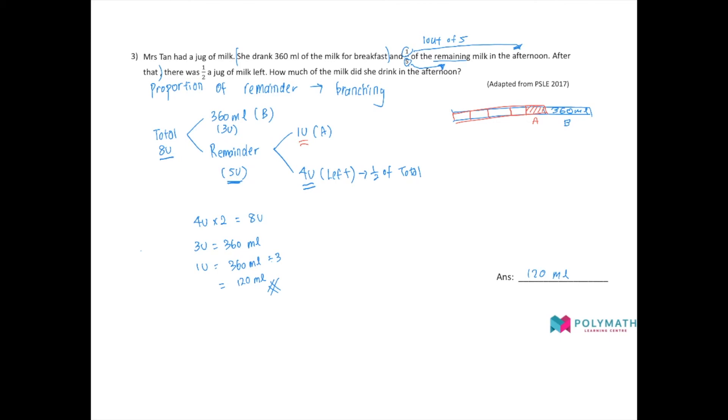So following the question they say what is left is actually half of the total. So what is left is this four units, right? And that is actually half of the total. If this portion is representing half of the total, then wouldn't the one unit and 360 be also half? Okay, so this actually also represents four units. Okay, so if four unit is 360 ml plus this one unit, that means 360 ml is equal to three units.